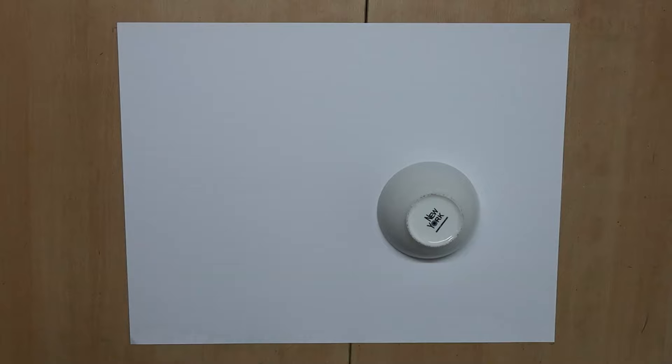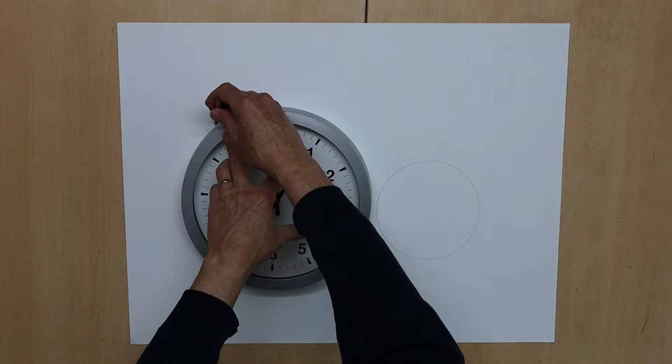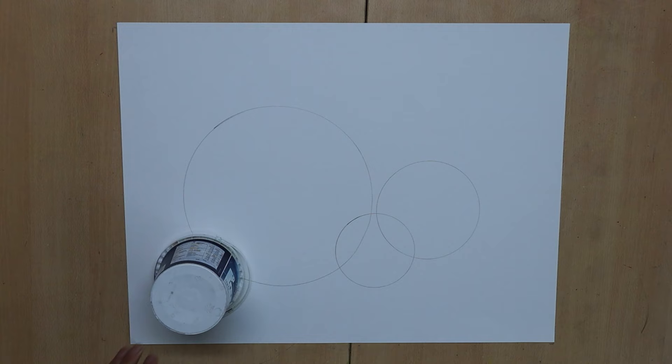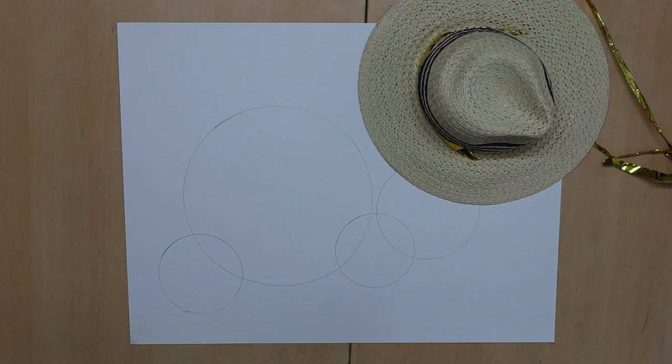In case I do want to create a perfect circle, I take a bowl, my clock, or whatever item has the size I need. But more often, I just paint or draw one by hand.